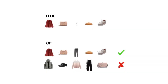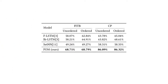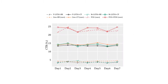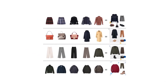To evaluate the performance of different models on predicting outfit compatibility, we adopted two widely-used tasks, FITB and CP. The table shows the results. Foam achieves the best performance in both FITB and CP tasks. We also record the CTR on outfits over a period of seven days. Although the CTR values vary during the seven days, it still observes an obvious phenomenon that POG outperforms the others. We randomly sample some online cases in this figure.